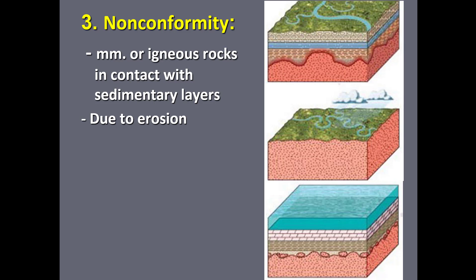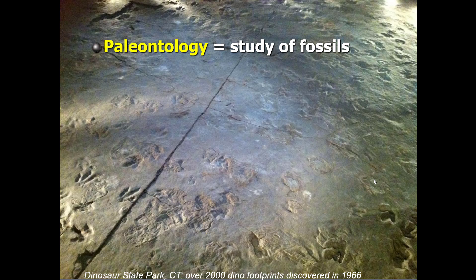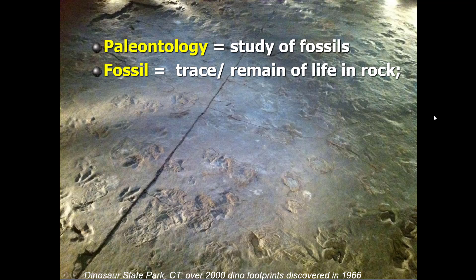Your next activity covers these three types of unconformities, using the same diagram to figure out where the unconformities are. Another important tool for identifying the age of rock layers is paleontology — the study of fossils. Fossils are any trace or remain of life, and they can include many different things.